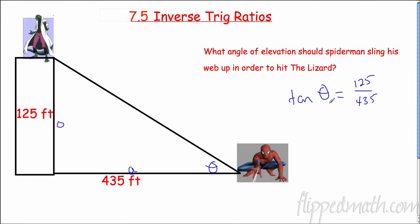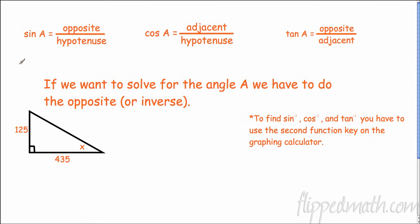Now we have theta here and that's what we want to solve, so we have to undo it. Quick reminder: we have sine is opposite over hypotenuse, cosine adjacent over hypotenuse, and tangent opposite over adjacent, otherwise known as SOH CAH TOA. To find these we have to do the inverse or opposite.